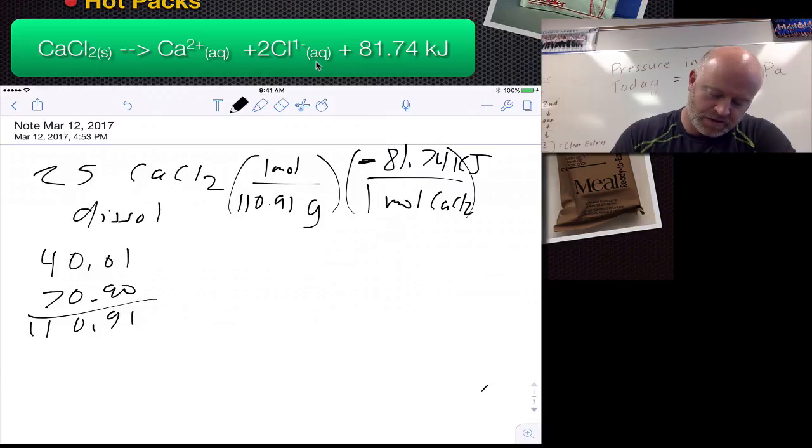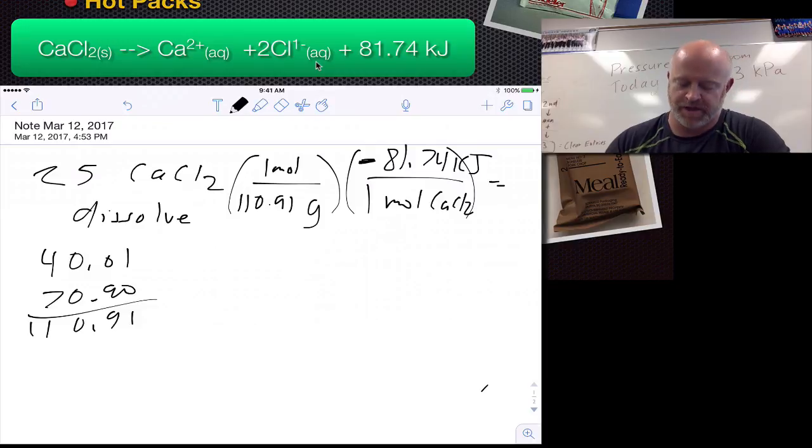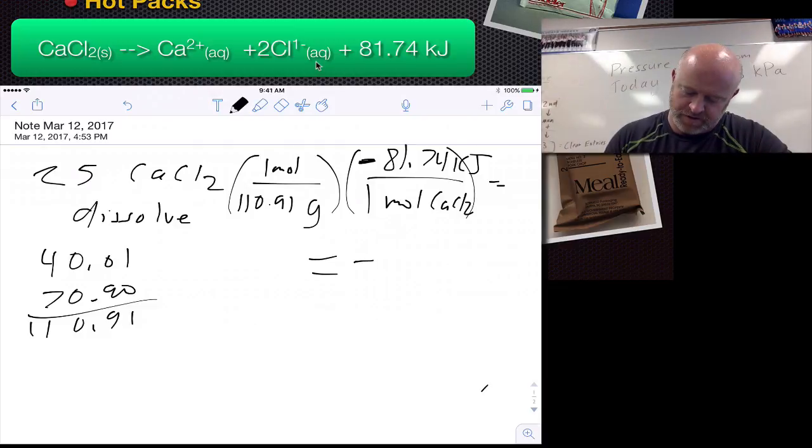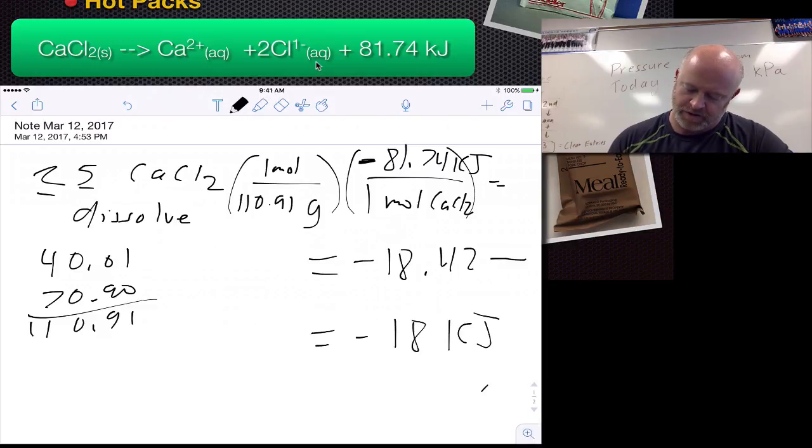We plug that in, pull out the trusted calculator, and take our 25 grams divided by 110.91, take that times negative 81.74, and we get a value of negative 18.42. I only use two sig figs here, so essentially I'm saying that this process is going to give me a releasing of 18 kilojoules of energy.